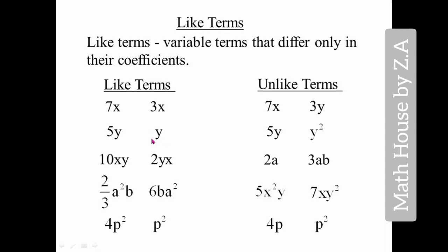In the second example, 5y and y: when you don't have any number before y, the coefficient is 1. So 5y and y both have the same variable y — they are like terms. But 5y and y² have y with power 1 and y with power 2 respectively, so both variables are different in terms of exponent and they are unlike terms.